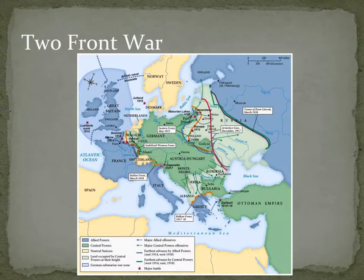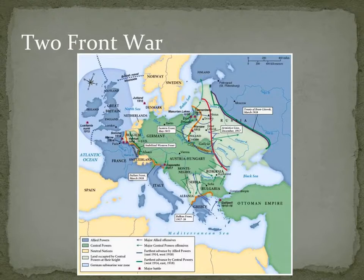On the Western Front, Germany and Austria-Hungary — mostly Germany — fought against Great Britain and France, along the lines running through northeastern France. On the Eastern Front, Russia fought against Germany and Austria-Hungary. Go ahead and record that information.